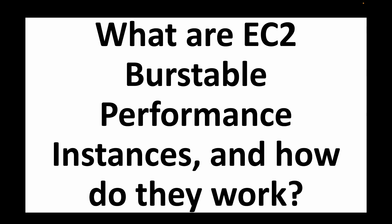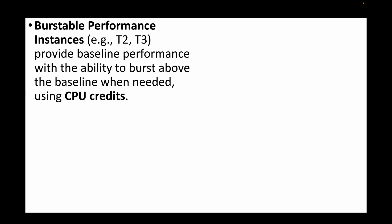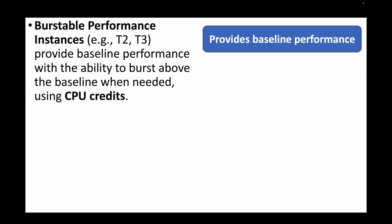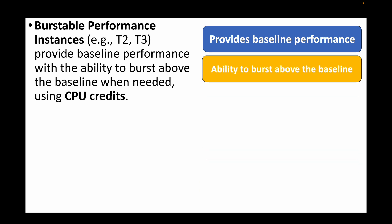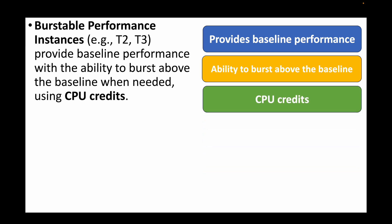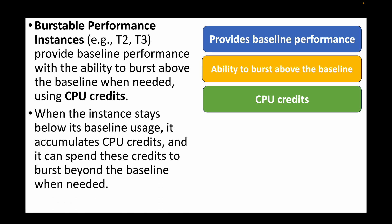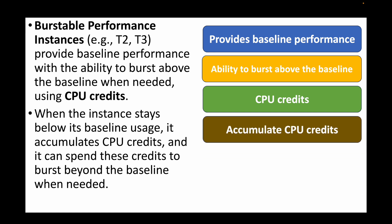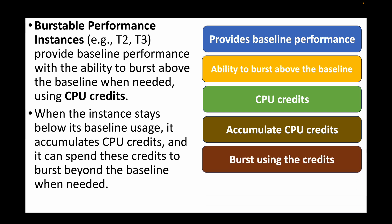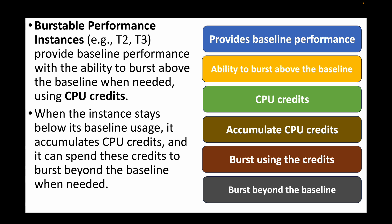The next question is: what are EC2 burstable performance instances and how do they work? Burstable performance instances like T2 or T3 provide a baseline performance with the ability to burst above that baseline whenever needed, using CPU credits. When the instance stays below the baseline usage it accumulates CPU credits, and those credits can be utilized when you need to go beyond the baseline performance.